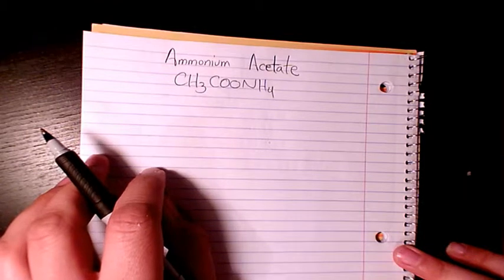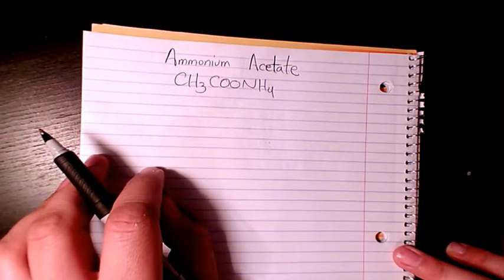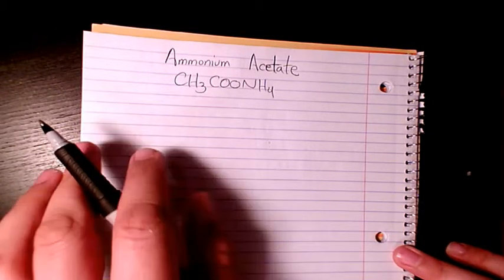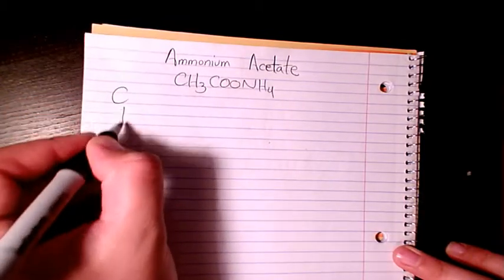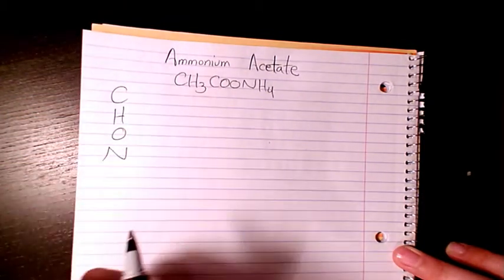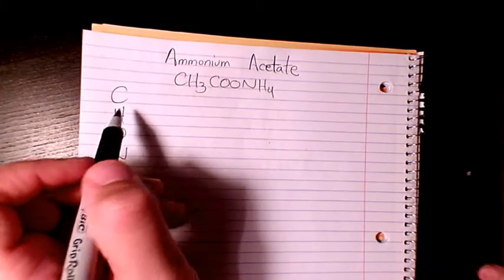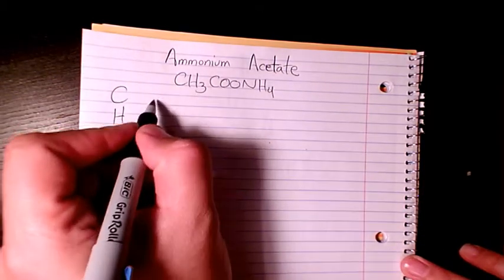In order to find the molar mass or molecular weight, we need to find the atomic mass of all elements in the chemical formula. We have carbon, hydrogen, oxygen, and nitrogen.